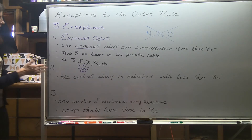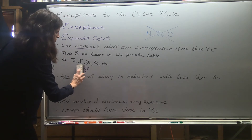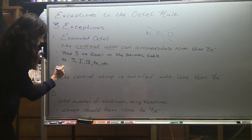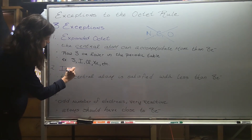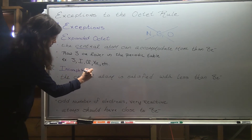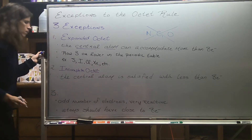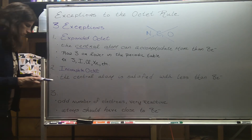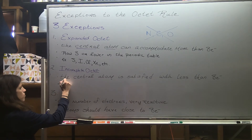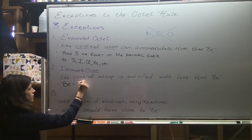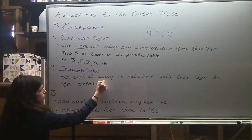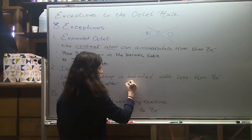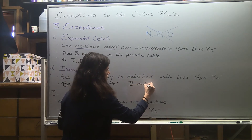The second exception is the opposite of an expanded octet - it's called an incomplete octet. This one is a little easier to recognize. You're already aware of one: hydrogen does an incomplete octet and likes to have just two electrons. Apart from hydrogen, we have beryllium, which is satisfied with four electrons, and we have boron, which is satisfied with six electrons.